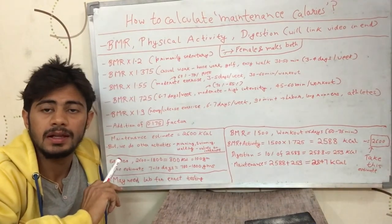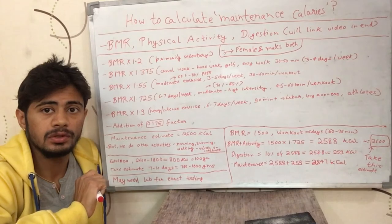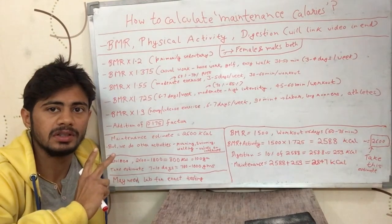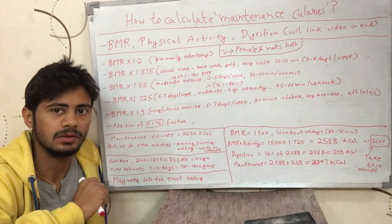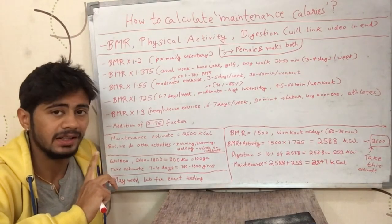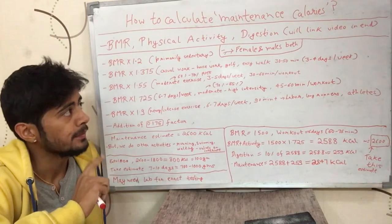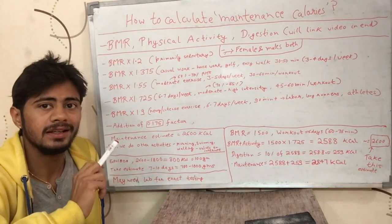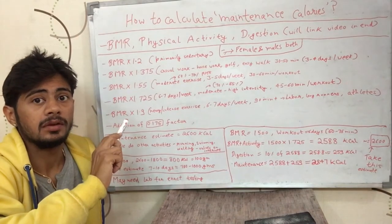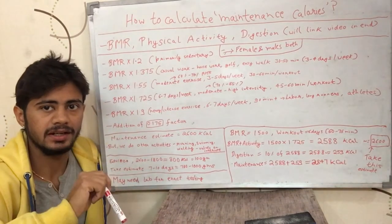I have done a video on where our bodies burn energy. In that video I explained that we can divide the energy our body burns into three categories: the first is BMR, the second is physical activity from moving or exercising, and the third is digestion. I will link the video on how to calculate BMR and the video on where our body burns energy in these three segments at the end.